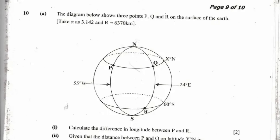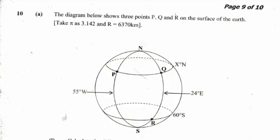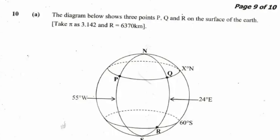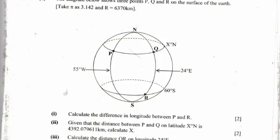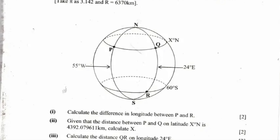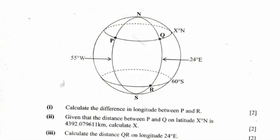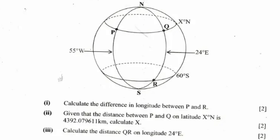We can see we've got a nice globe here in the middle of the question. It says the diagram below shows three points P, Q and R on the surface of the earth. You can take pi as 3.142 and R as 6,370 kilometres. The first part of the question asks you to calculate the difference in longitude between P and R. Part two says, given that the distance between P and Q on latitude X degrees north is 4,392.079611 kilometres, calculate X. And then part three says, calculate the distance QR on longitude 24 degrees east. How do you think the flat earthers will do? After all, they know more about our model than we do, apparently.